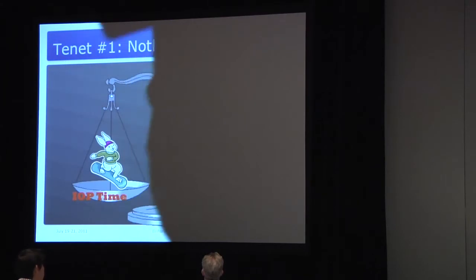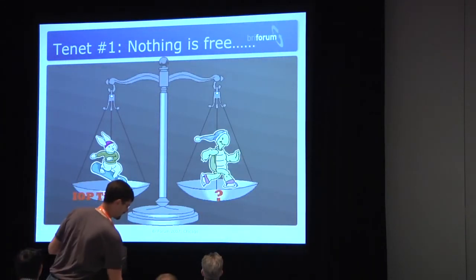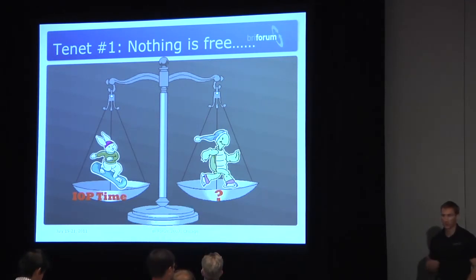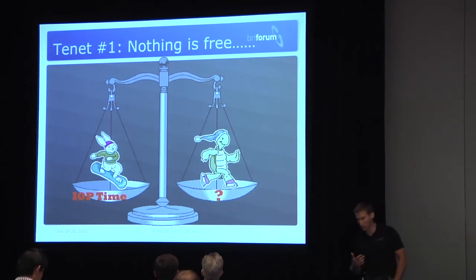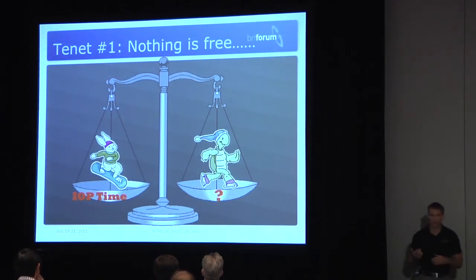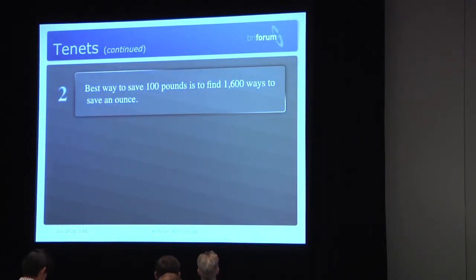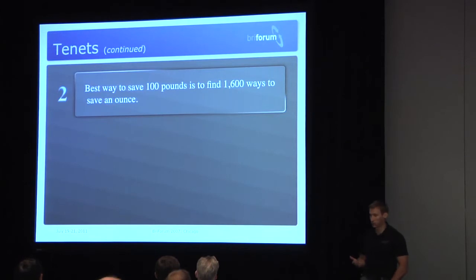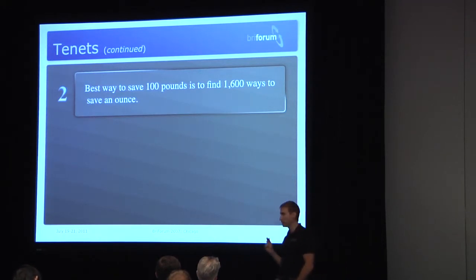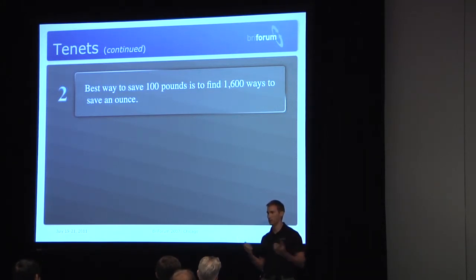There are some tenets you need to know before we start. First: nothing in life is free. IO time could come at the expense of something else — whether it's money or increased CPU, it will come at a price. The best way to save 100 pounds is to find 1,600 ways to save an ounce. Some of these things may seem minor, but when you start firing up hundreds or thousands of desktops, 30 tiny little problems become a big problem.